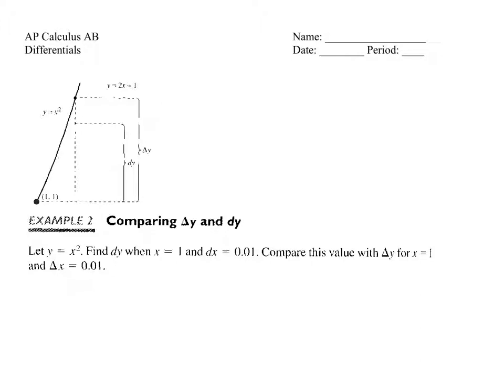One thing you can't see because it didn't come out in the printing is that we also have the tangent line at the point (1, 1). What you saw yesterday is the tangent line approximation: if we find the equation of the tangent line at a point, we can plug in values of x really close to the point of tangency and approximate what the actual function will equal using the tangent line instead.